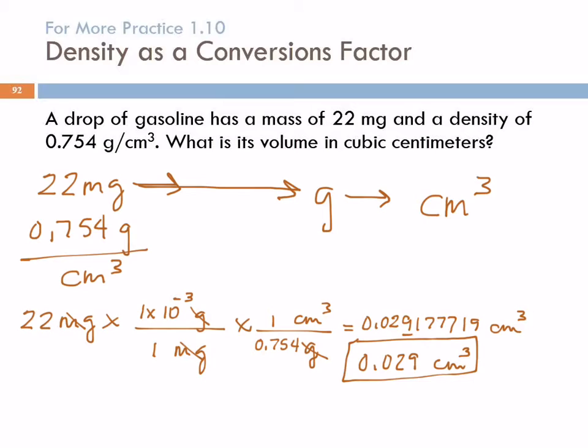And so we have 0.029 cubic centimeters. Two sig figs? Two sig figs. Because of the 22 milligrams. So the leading zero doesn't count? Leading zeros don't count. If we put that in scientific notation, those go away.